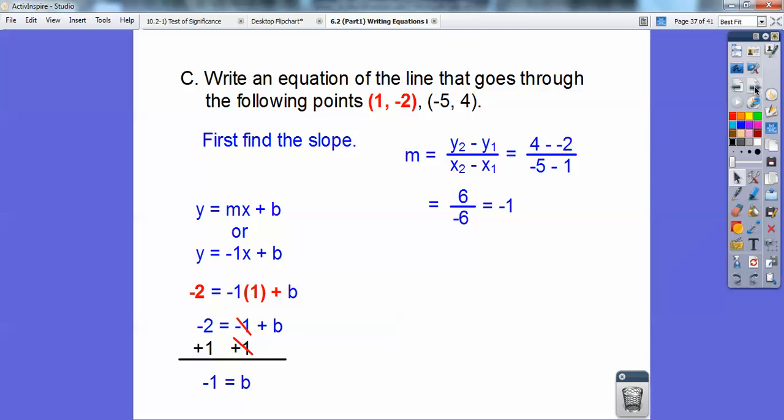Now, before I give you the final answer, watch this. I substituted in the other point also. And you'll see that I get negative 1. It doesn't matter which point you substitute in. You always get your same b as your answer. So then my final answer, y equals mx plus b, is y equals negative 1x minus 1. But you don't need the negative 1 in front of the x. It's understood to be a negative 1 right there.